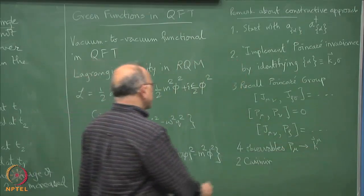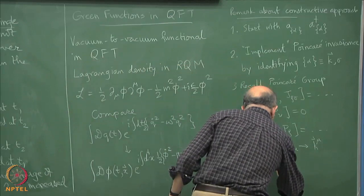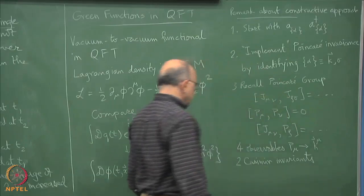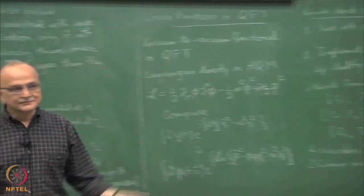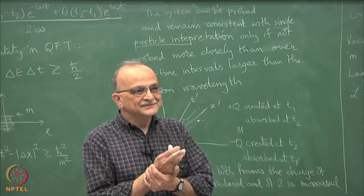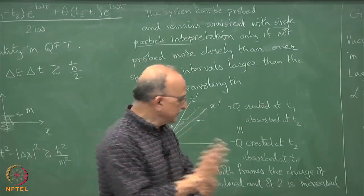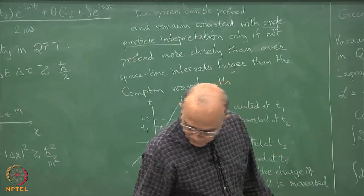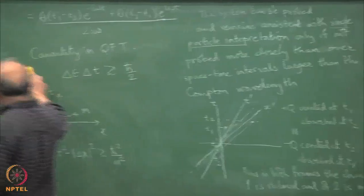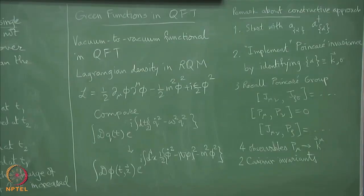The only mutually commuting observables available in Poincaré group are the K mu. However, there are 2 Casimir invariants. Who knows? One is J squared. Not quite sorry, not J squared.